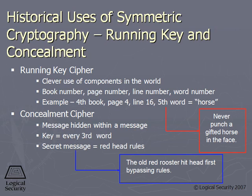You and I have the same key — you know to pull out every third word of my message. And when you pull out every third word, it has a totally different message, like 'we're going to bomb Libya' or something. So that's a concealment cipher: a message within a message. It's not actually encrypted — it's just hidden.